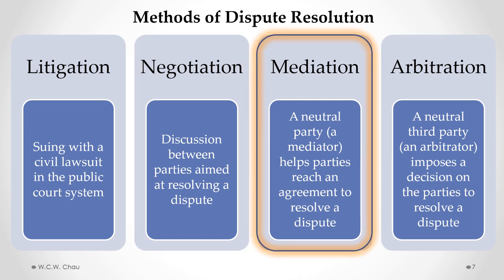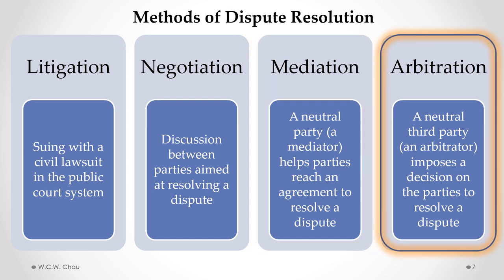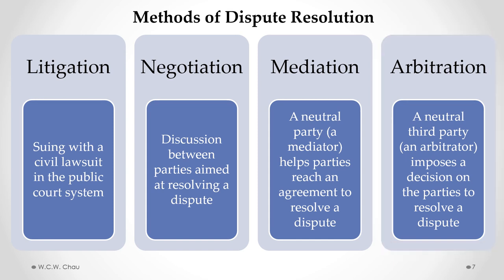The next form of ADR is Mediation. This is where a neutral third party, or someone called a mediator, gets involved to help the parties reach an agreement in order to resolve a dispute. And the last method of ADR is called Arbitration. This also involves a neutral third party, now called an Arbitrator. The arbitrator listens to both parties and then imposes a decision on the parties in order to resolve a dispute.